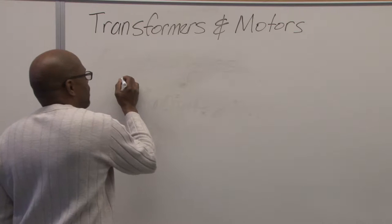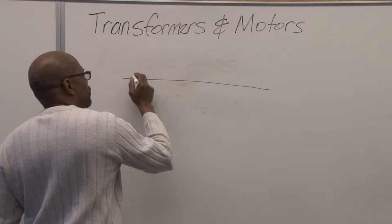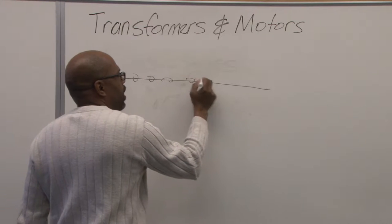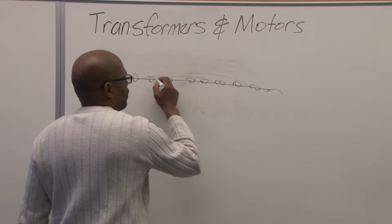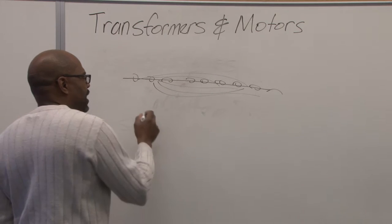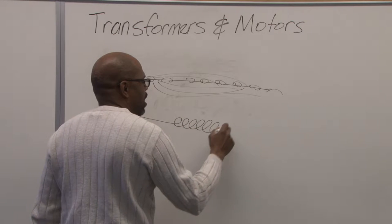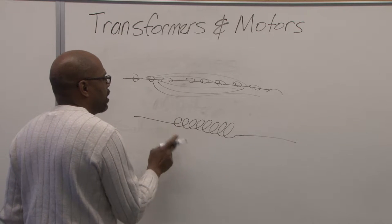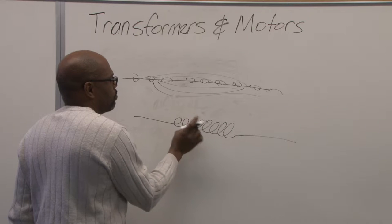We know that when there's current flowing through a wire, it produces a magnetic field around the wire as electrons flow. So we have a magnetic field, a very weak magnetic field, but it's still a magnetic field. But if we take the same wire and put it into a coil, we are multiplying that magnetic field around it. It becomes stronger because we are multiplying the current in a small space.